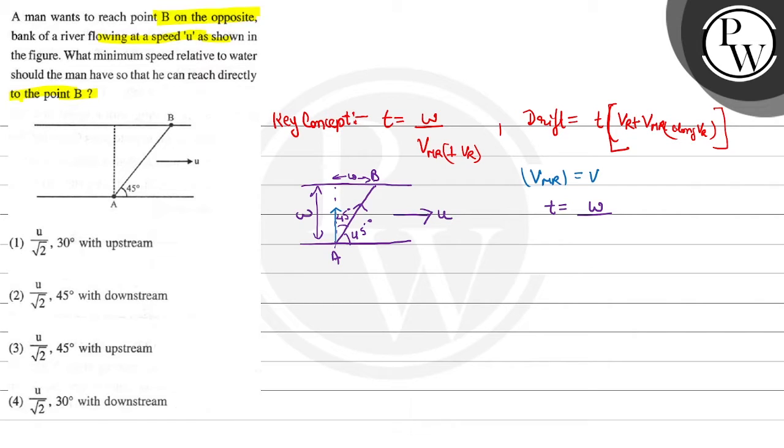Here the speed is VMR at this angle. This angle value is equal to theta. Basically, the time is equal to W divided by V cos theta. This is our time.